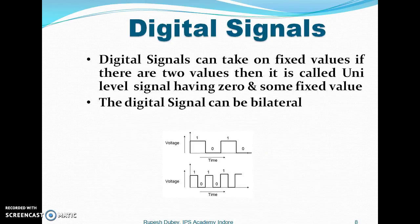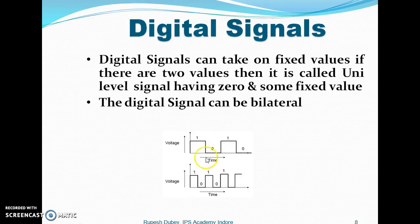Digital signals can take on fixed values — plus 1 and 0, or plus 1 and minus 1. Plus 1 and 0 is called a unilateral signal, while plus 1 and minus 1 is called a bilateral signal. So we have voltages going 1, 0, 1, 0, 1, 0 and so on.